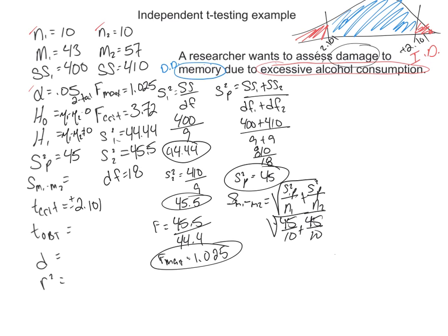We would go square root of 45 divided by 10 plus 45 divided by 10. So we get 4.5 plus 4.5 or square root of 9. This equals 3.